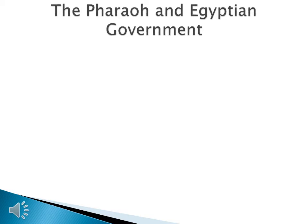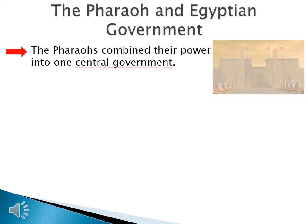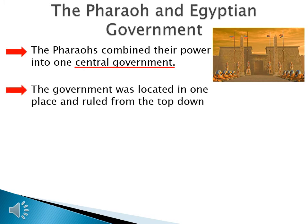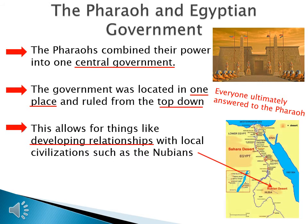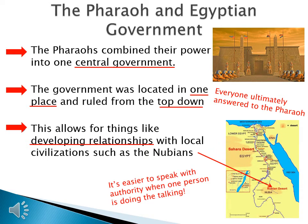There is one major advantage of putting one person in charge of both the government and the religion. Pharaohs can bind their power into one central government located in one place, ruled from the top down. Everyone ultimately answered to the pharaoh — no matter where you were in the government or what you did in the religion, everybody was ultimately responsible to one person. This allows for things like developing relationships with local civilizations. The Egyptians developed a relationship with the Nubians, but only because the pharaoh controls the dialogue and how that relationship develops. It's easier to speak with authority when one person is doing the talking.